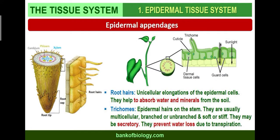Now, the epidermal appendages, like trichomes and hairs. Root hairs are unicellular elongations of epidermal cells; they help to absorb water and minerals from the soil. Trichomes are epidermal hairs on the stems. They are usually multicellular, branched or unbranched, and can be soft, stiff, or secretory. Their main function is to prevent water loss due to transpiration.